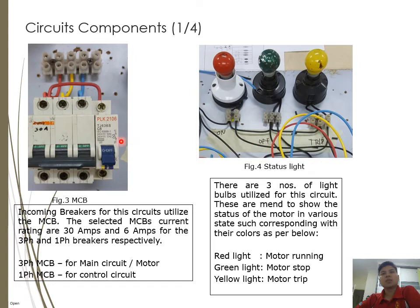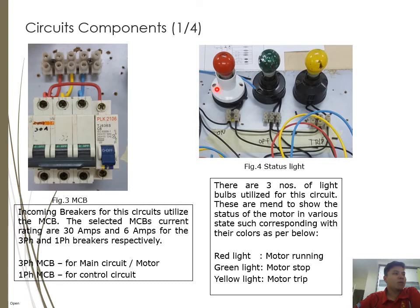The circuit breaker is the incoming breaker for this circuit. The selected MCB current ratings are 30 amperes for the three-phase breaker (for the main/power circuit) and 6 amperes for the single-phase breaker (for the control circuit). There are three light bulbs used to show the motor status: a red light for motor running, a green light for motor stopped, and a yellow light for motor trip.